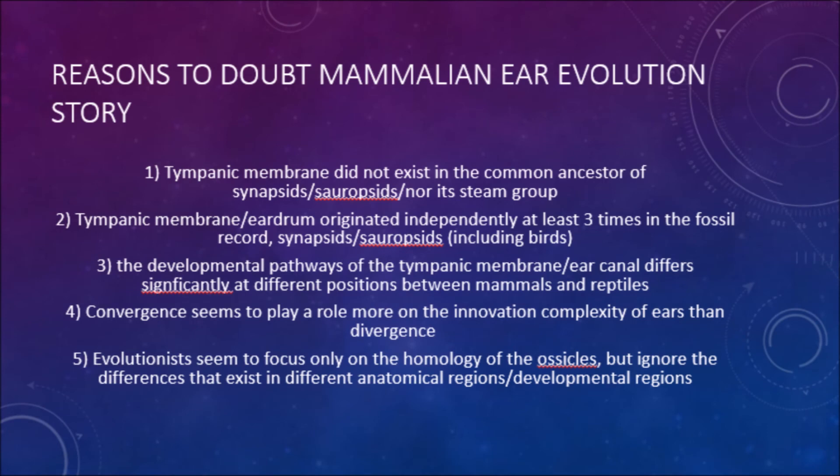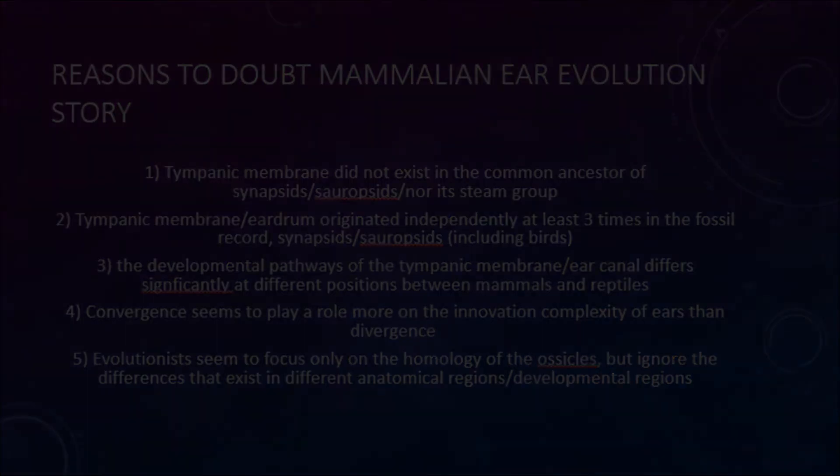What we have here is a great example of convergence independently appearing across different groups. While evolutionists like to point out similarities like the three ossicle bones, they ignore differences such as the different positionings of the tympanic membrane and external ear canal. To argue that the evolution of the mammalian ear was transitioned from a single ossicle is therefore unjustified. By the way, thanks for watching.